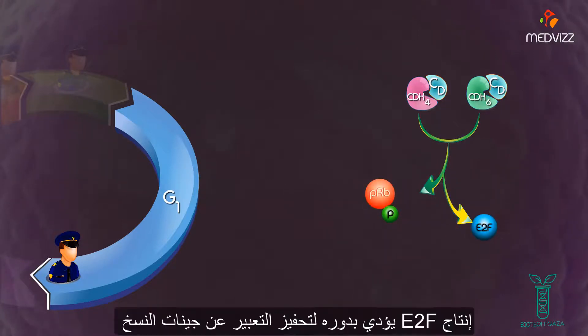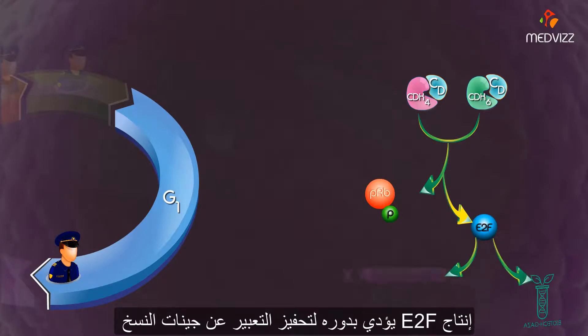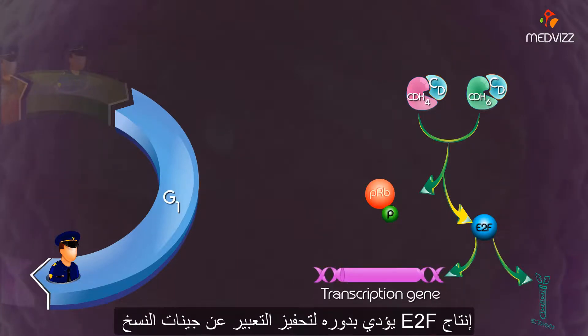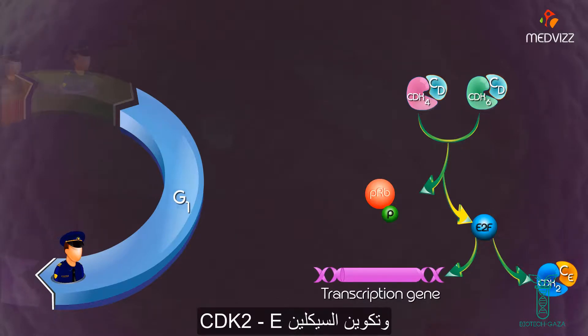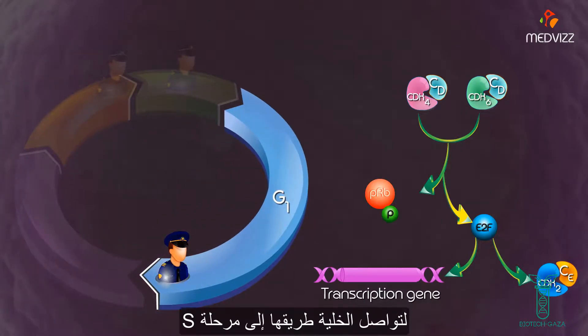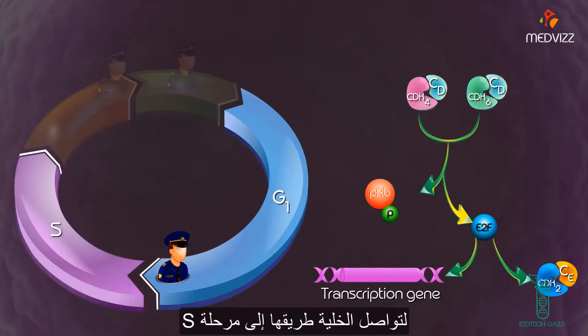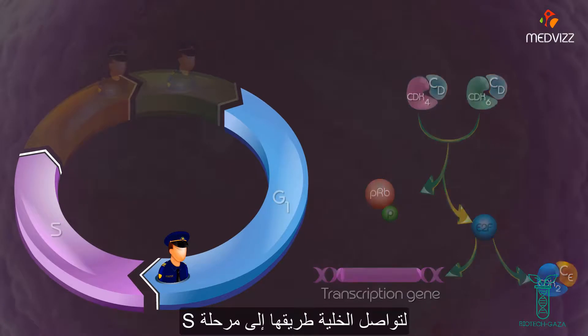The expression of E2F then leads to the expression of transcription genes and formation of cyclin E CDK2. Therefore, the cell is pushed into the S phase.